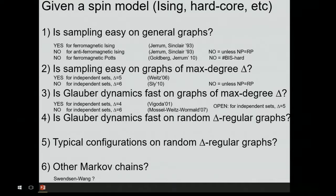We can look at many spin models and there are lots of interesting questions. The first question is: is it easy to sample from the model on general graphs? Sometimes this is possible — for a ferromagnetic Ising model, for example. But more often it's not possible. For most models we are unable to sample from the distribution on general graphs, so we have to look at more constraints on the graph. One such constraint is the maximum degree. For maximum-degree-five graphs, sampling is easy; for maximum-degree-six graphs, it's difficult for the independent sets model.